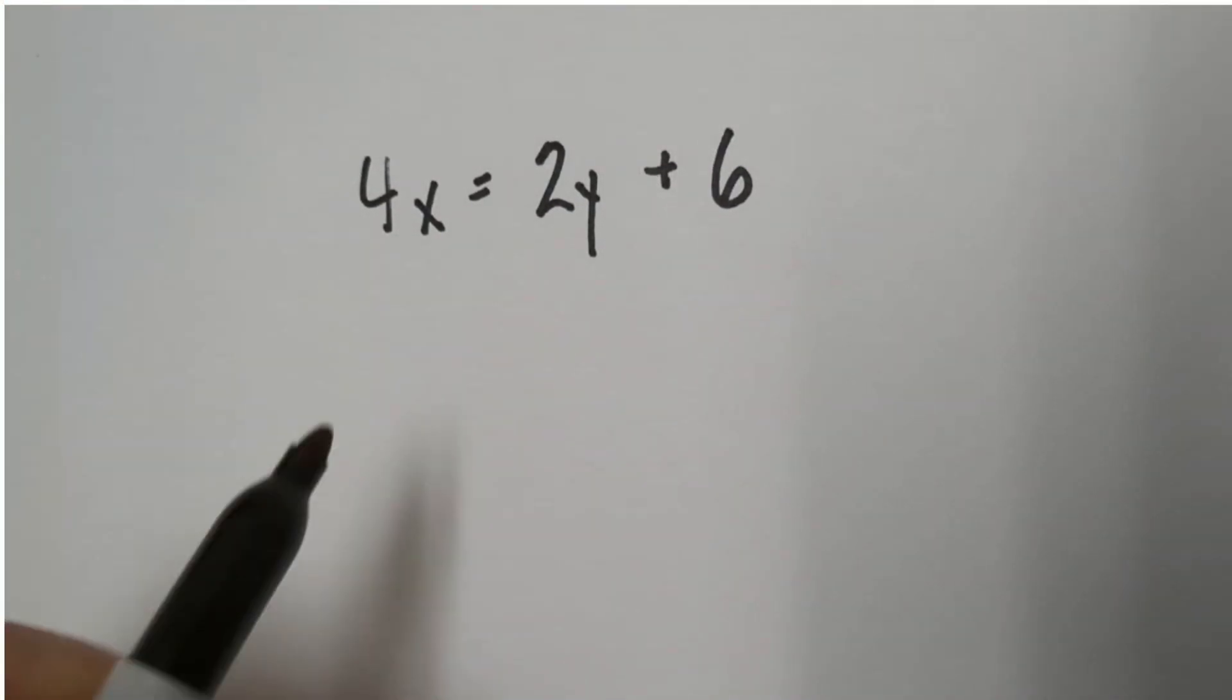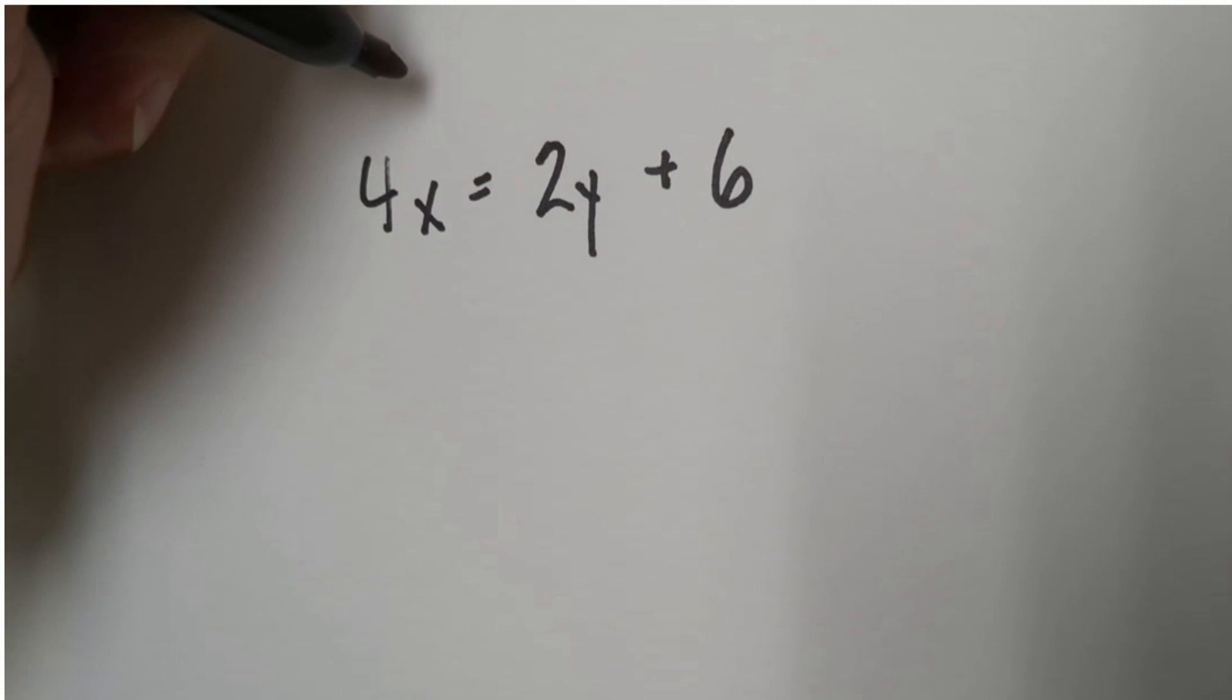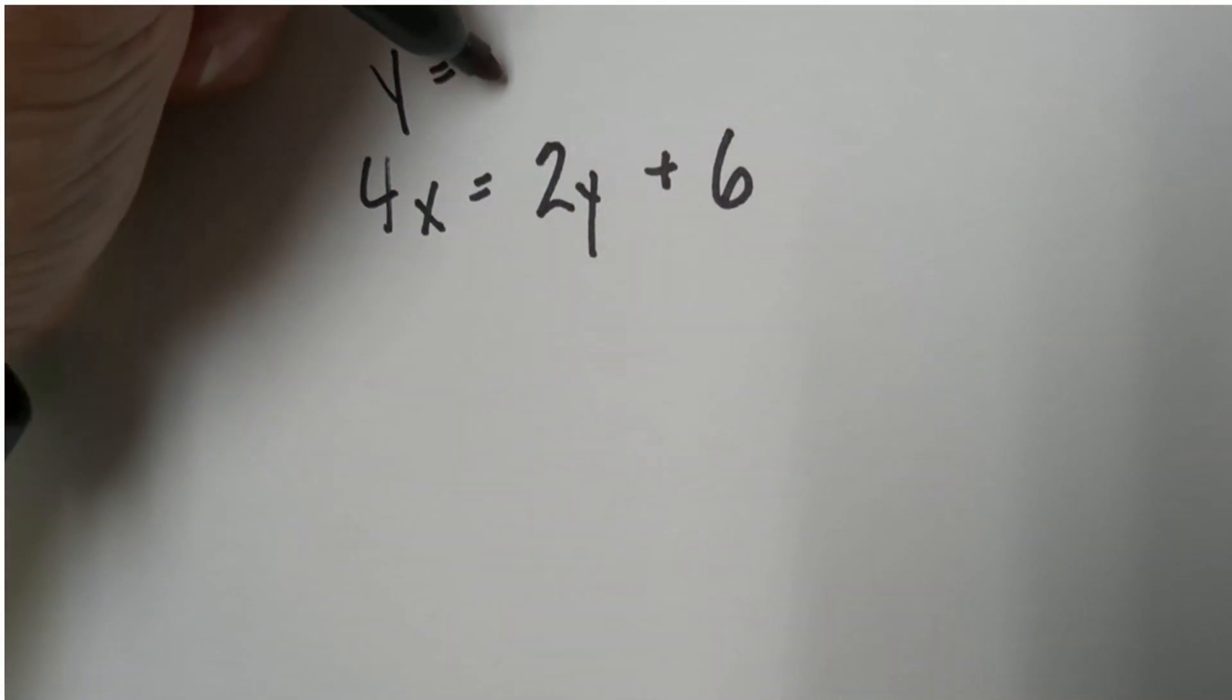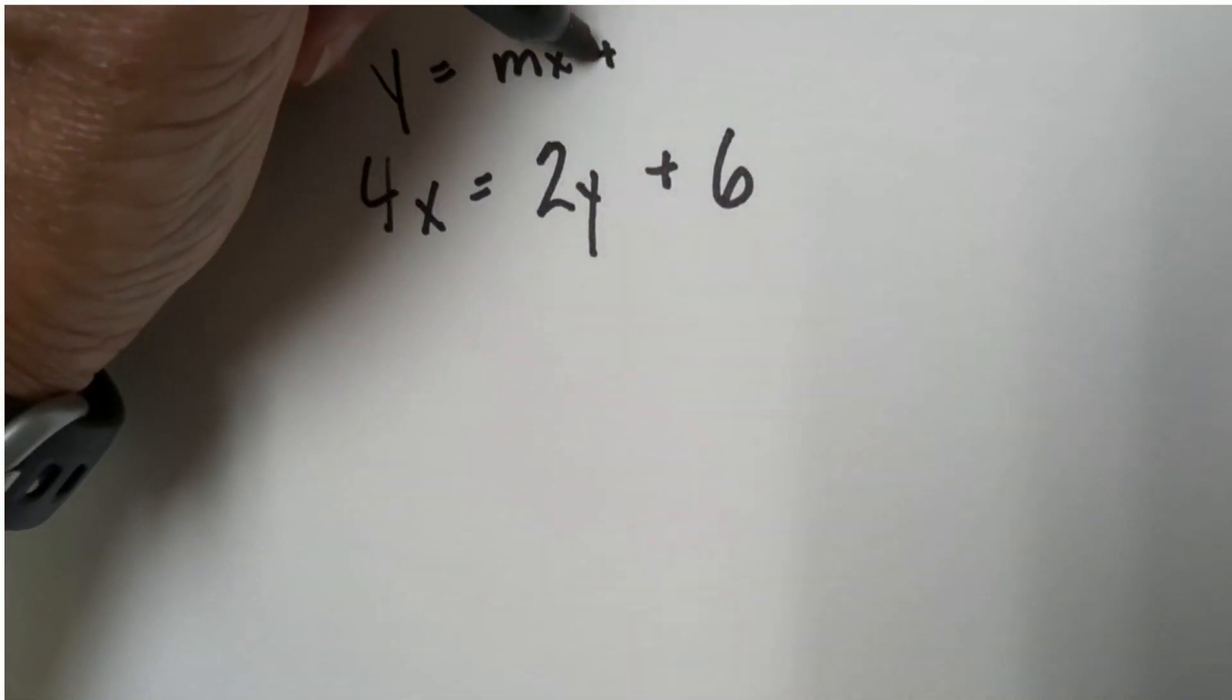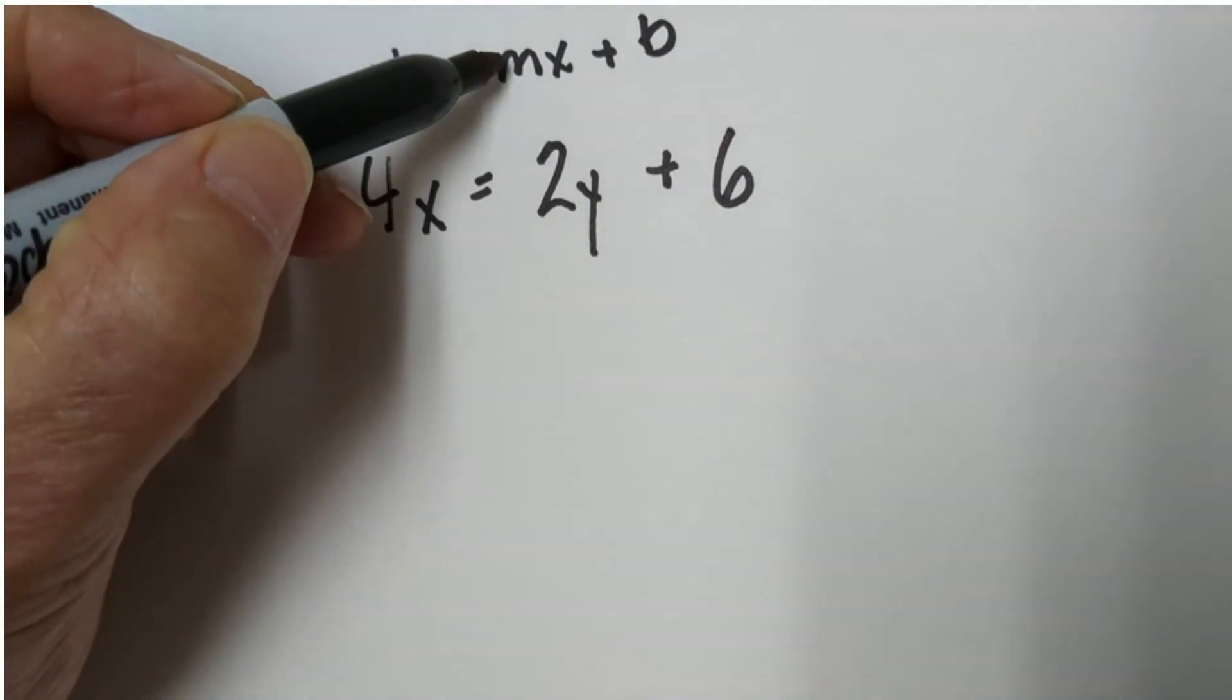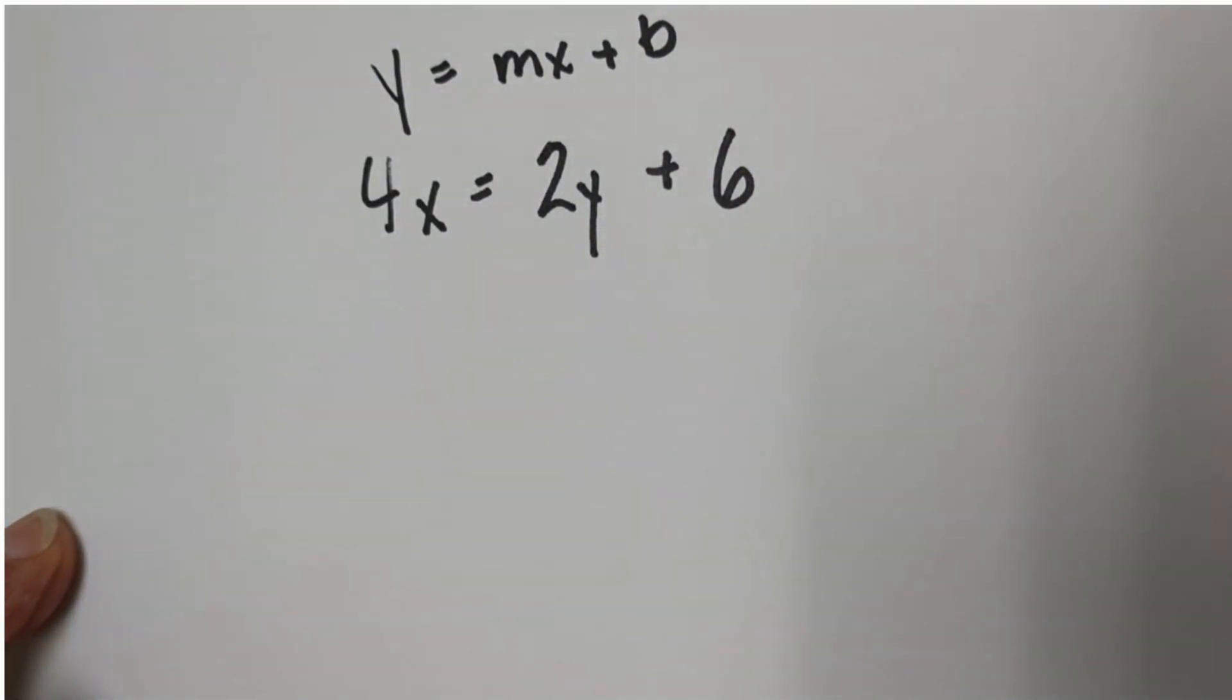Okay, let's go ahead and put this in slope-intercept form. Just to remind you, remember it's y equals mx plus b. m is the slope, b is the y-intercept.